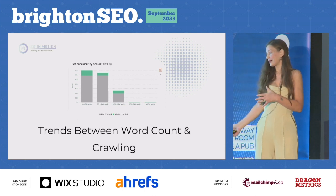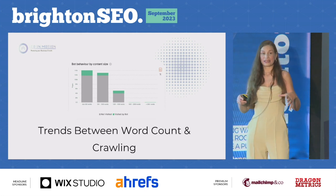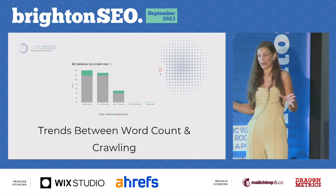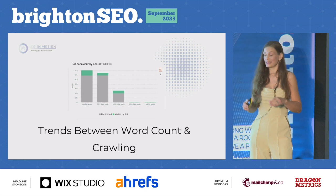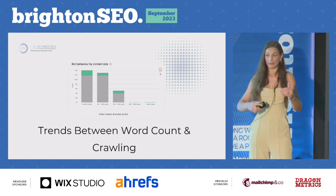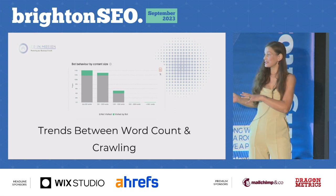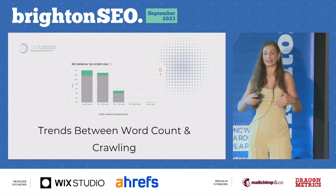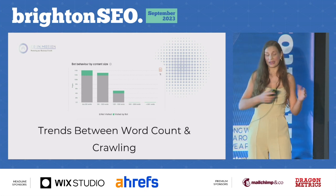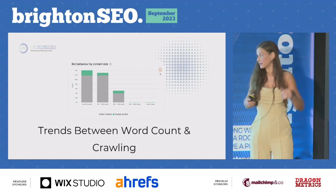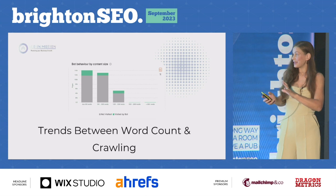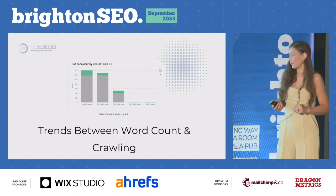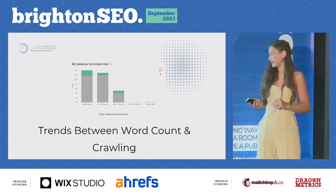There are also trends between word count and crawling. It's important to point out that Google doesn't care about word count, but it might highlight content on your site that's doing really well — a particular template or viewpoint that's working and that Google likes, which probably goes back to user intent. If there's a setup your content team is using that's working really well, it's usually highlighted in a trend with word count.